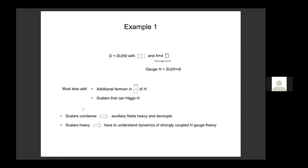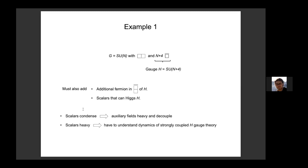When those scalars I introduced are condensed, the extra stuff is heavy. I start to change the potentials for that scalar — the condensation gets smaller, these things become lighter. Eventually I make those scalars heavy and decouple them, leaving a strongly interacting quantum field theory. The strong interactions aren't to do with G — they're to do with this extra symmetry group H. So I now have a quantum field theory to solve: this gauge group H coupled to these fermions.